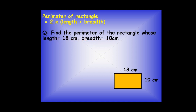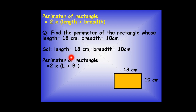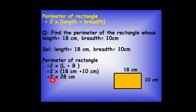We put the values for L and B. Here L is 18 centimeters and B is 10 centimeters. Adding these two: 18 plus 10 equals 28 centimeters. In the next step, I multiply 2 by 28, and upon multiplication I get 56 centimeters as the perimeter of this rectangle.